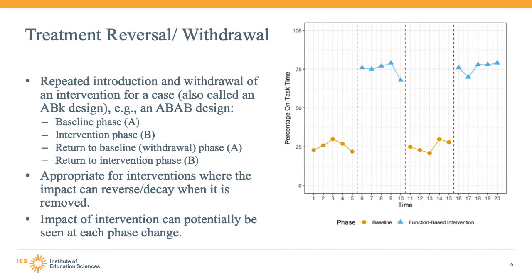The treatment reversal or withdrawal design is characterized by alternating phases without and with the intervention of interest. This design is also sometimes called an ABK design, where K represents the number of phase pairs. We present a typical treatment reversal design, which is an example of an ABAB design.